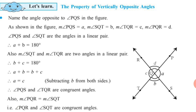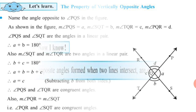B will be subtracted from both sides, and what remains is A equals C. So, in the figure, A equals C means opposite angles are equal. Therefore, angle PQS and angle TQR are congruent angles. Similarly, angle PQR and angle SQT are also congruent angles.